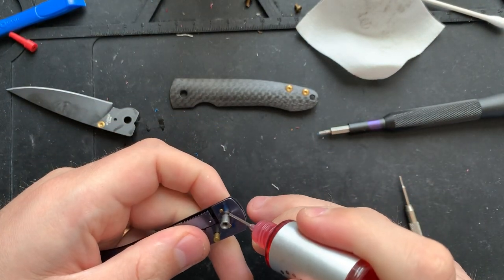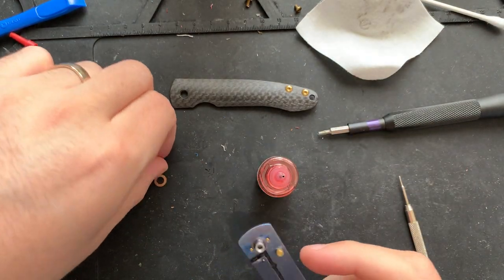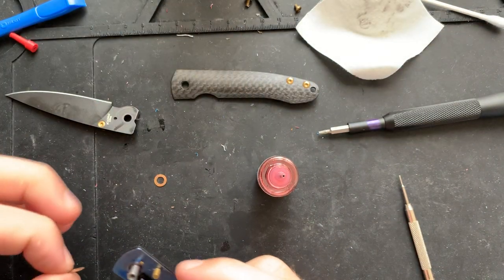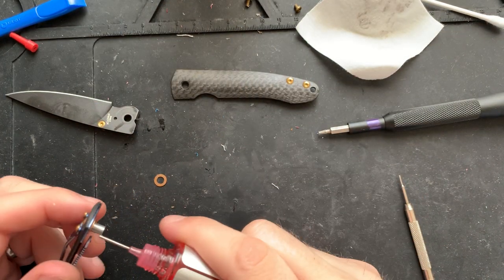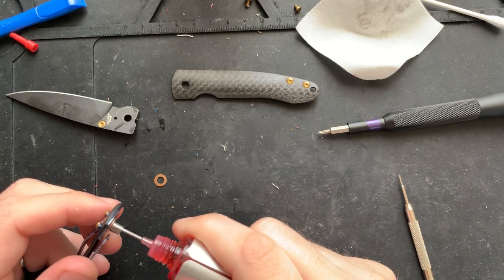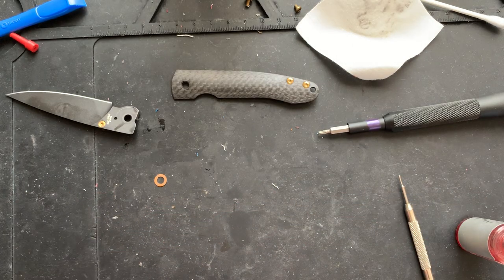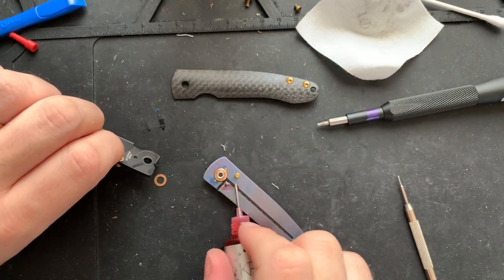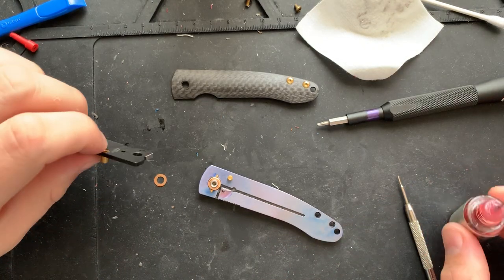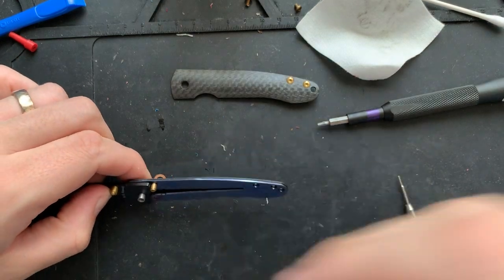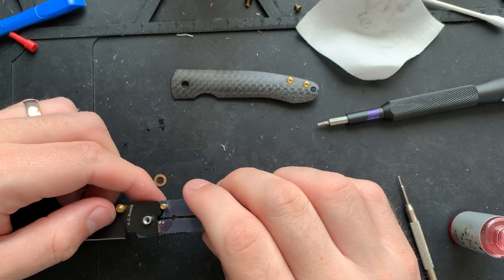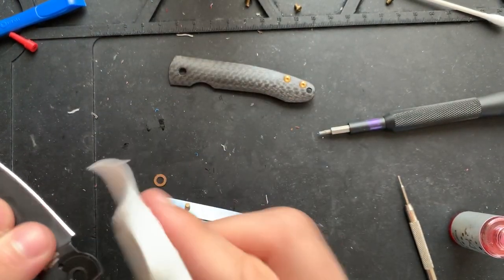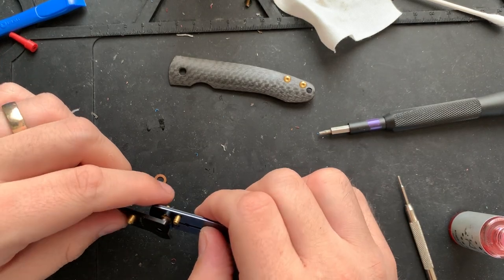I'm going to go ahead and use some knife pivot lube here. It works very nicely on phosphor bronze washers. Go ahead and put a little bit right here, and right here, and I'll try and drop a washer on here. It doesn't really matter which direction this is going, but I'll try and face any burrs towards the scale, rather than towards the blade. Okay, I will put a little bit of knife pivot lube around the pivot itself. I feel like lubricating a knife pivot with knife pivot lube is kind of really what this is all about anyways.